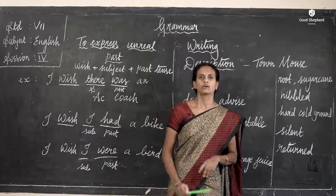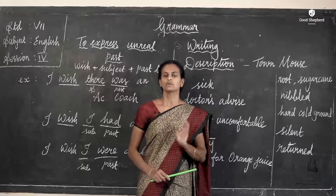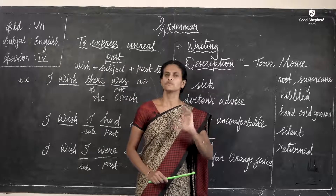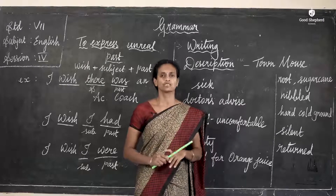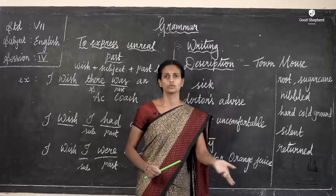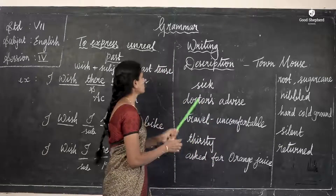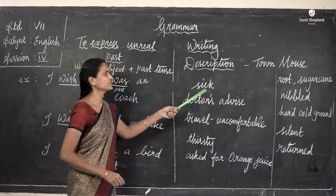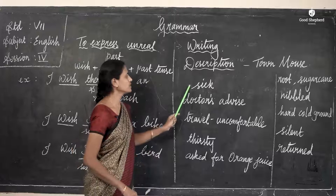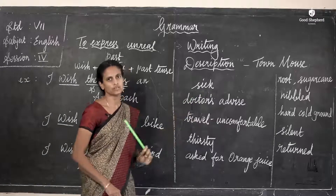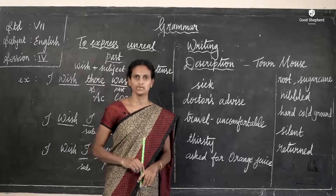Now let's see the writing part — how to write a description from the town mouse's angle. Remember, the town mouse traveled to the countryside, felt uncomfortable, and returned to its town. I have noted down important words and we are going to frame sentences using them. The first word is 'sick'. You must use only the first person — 'I' or 'we' — when writing the description.